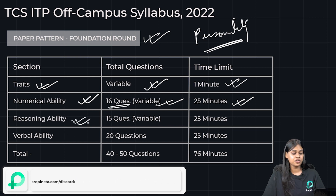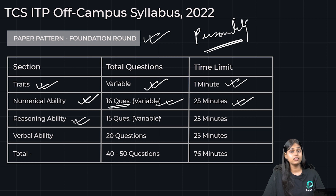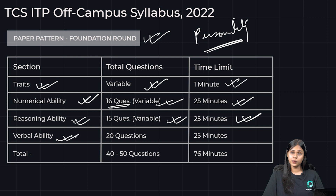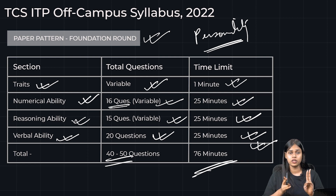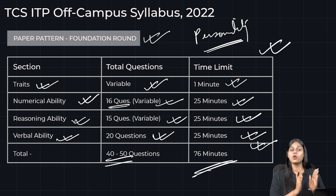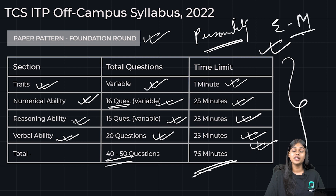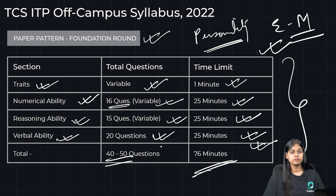The Reasoning Ability section has approximately 15 questions (variable) and 25 minutes. The Verbal Ability section has approximately 20 questions and 25 minutes. In total, that comes to 76 minutes and 40 to 50 questions for the Foundation Round. The difficulty level for this entire round is easy to medium. Importantly, the Foundation Round does not have coding — coding is only for the Advanced Round.